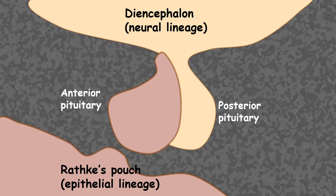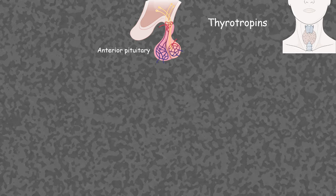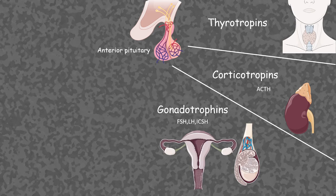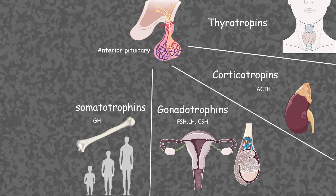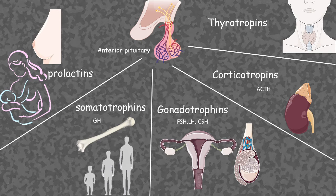The anterior pituitary gives rise to thyrotropin, which stimulates the thyroid glands. It gives rise to corticotropin, which stimulates the adrenal cortex. It also gives rise to gonadotropin, which affects the gonads. Somatotropin, secreted from the anterior pituitary, regulates growth of the bones. Prolactin, secreted from the pituitary, helps in breast development and lactation.